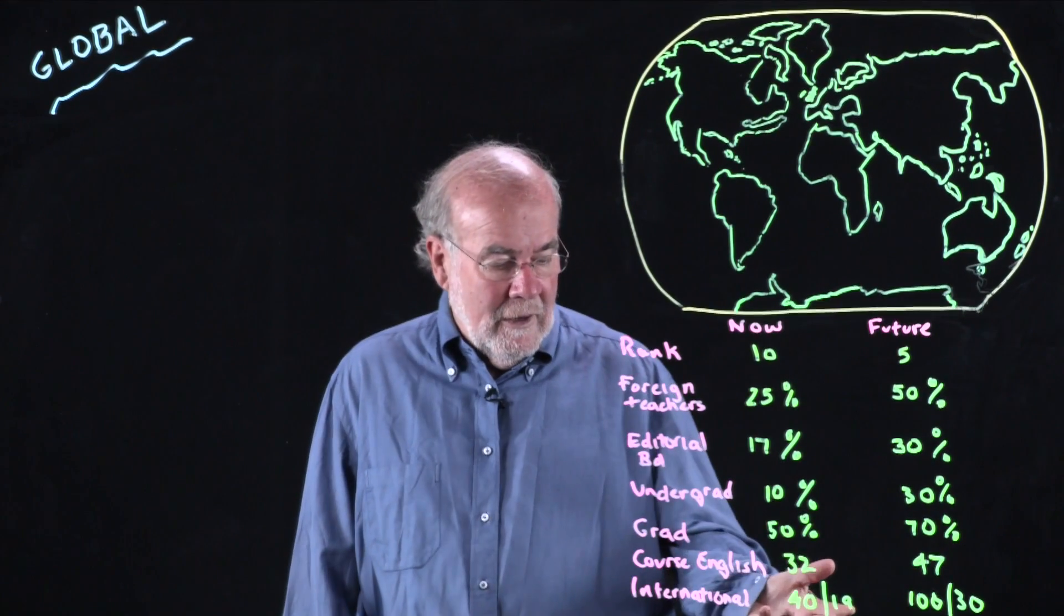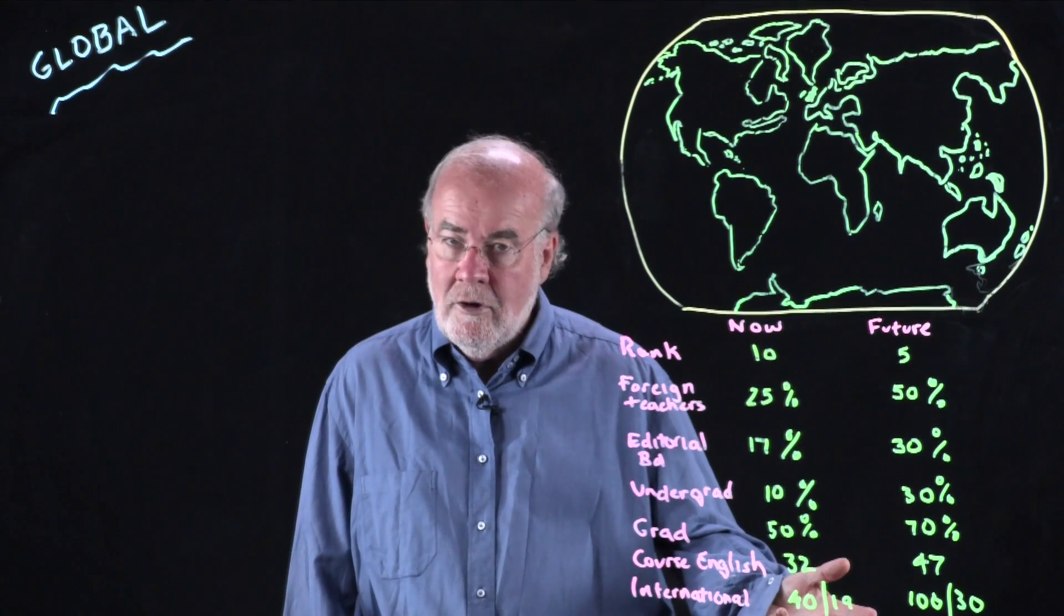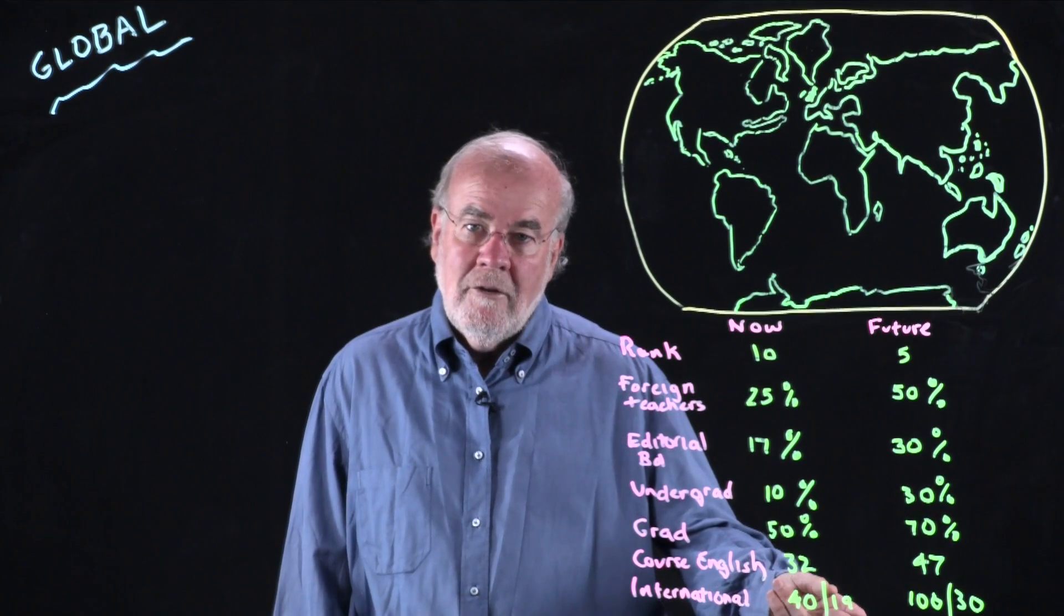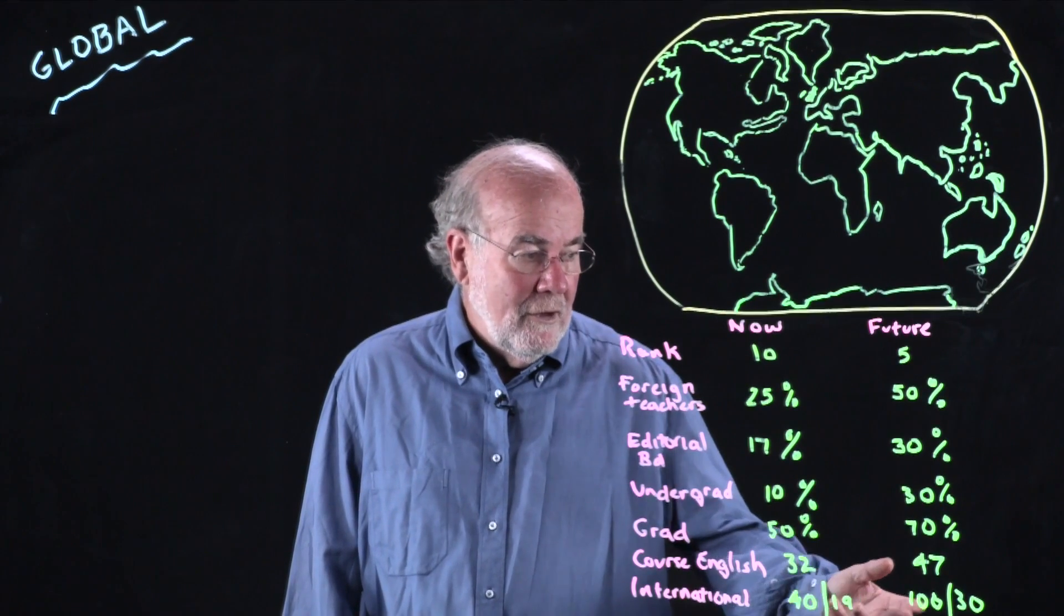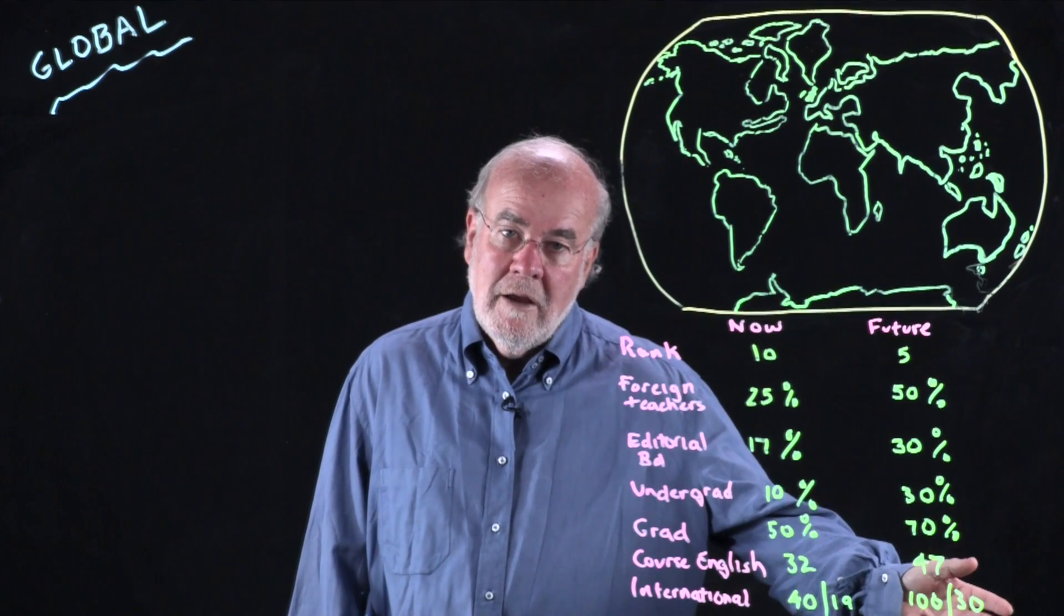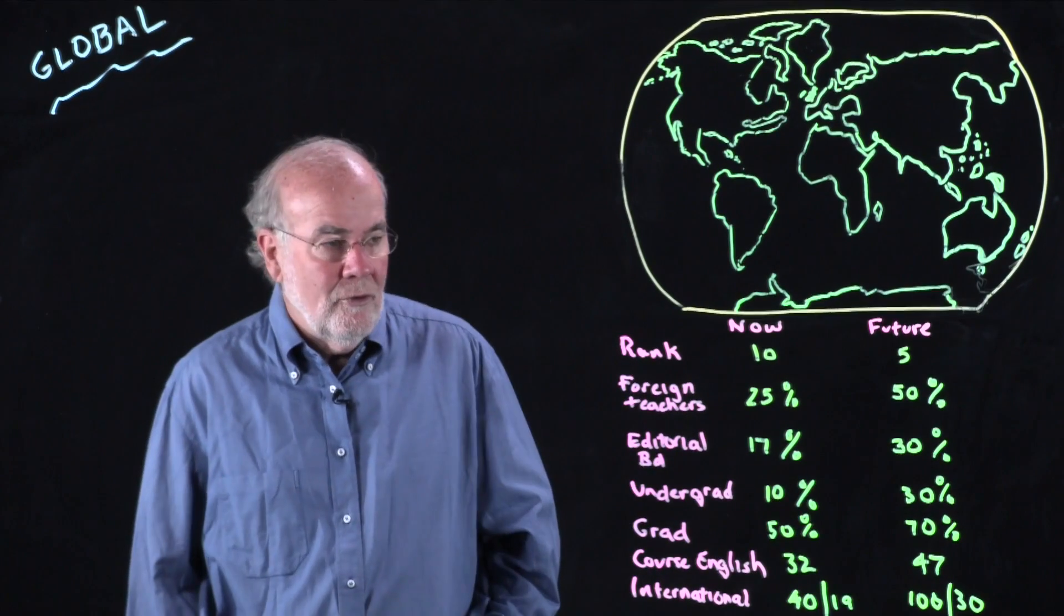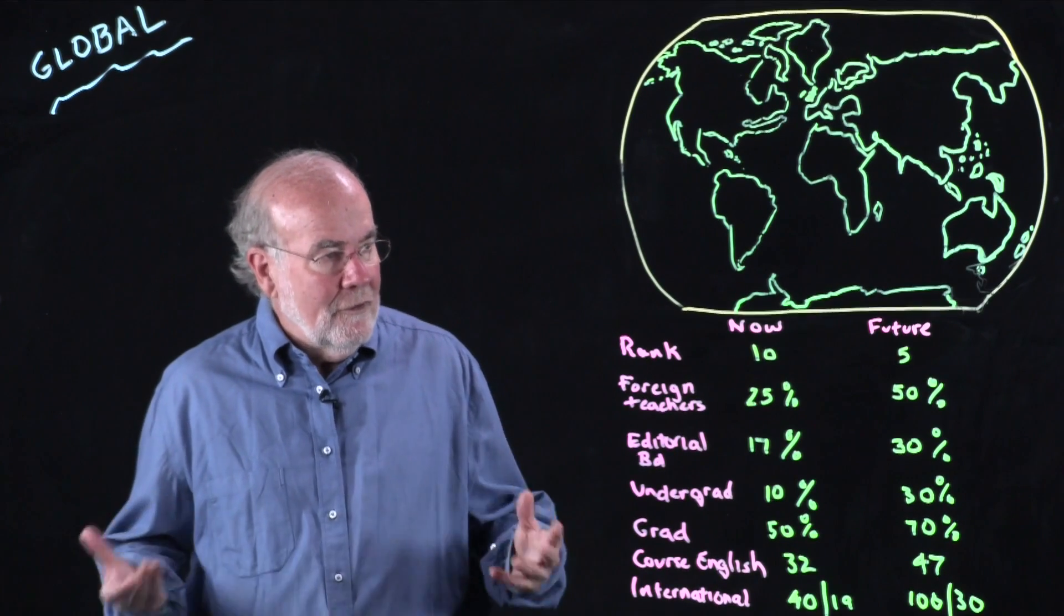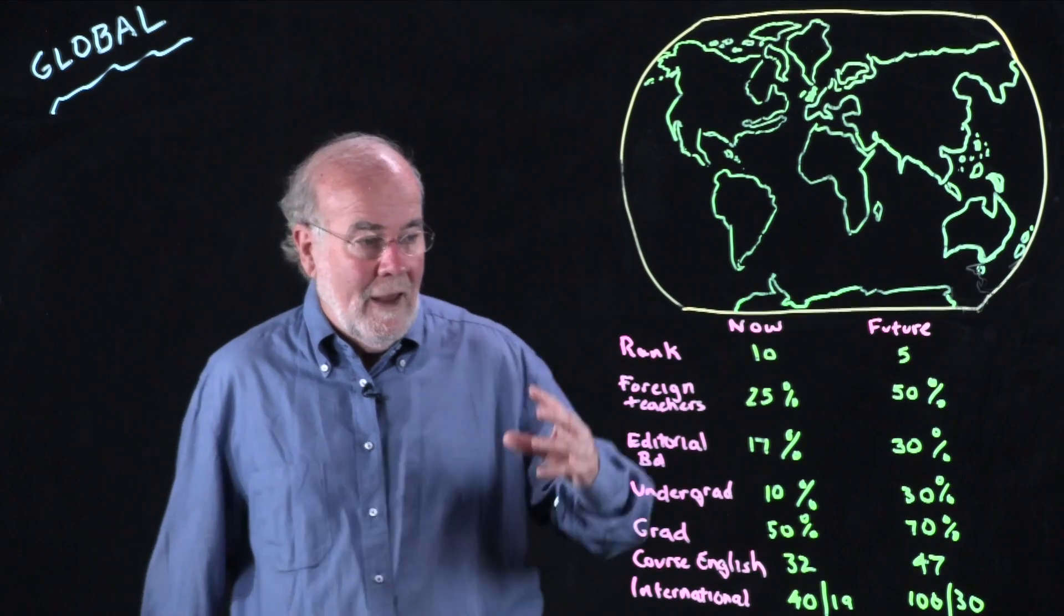In terms of publications in international SSCI approved journals and conference presentations, right now last year they had about 40 international conference presentations by their faculty and about 19 publications in international journals. Their goal is in the future to get up to about a hundred a year with 30 publications in international journals. This starts to give you a sense of the ambitions of universities and how they might be instantiated.